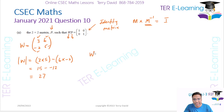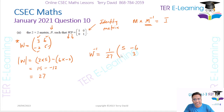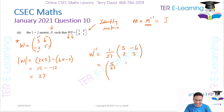The inverse of the matrix is 1 over the determinant, which is 1/27, multiplied by the adjoint of W. We swap positions of 3 and 5, then put a minus sign in front of 6 and a minus sign in front of -2 to get positive 2. Simplified: [5/27, -2/9; 2/27, 1/9].